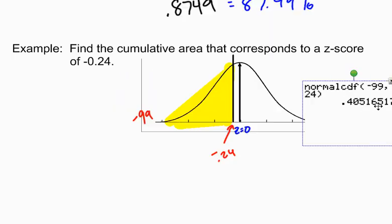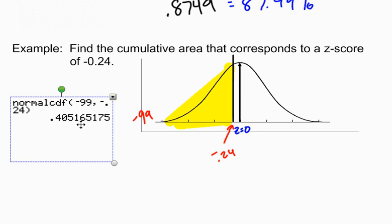So let me go ahead and pull this in over here. And there it is. The area, the cumulative area, that corresponds to a z-score of negative 0.24. In other words, the area to the left of a z-score of negative 0.24 is 0.405. I'll round off to four decimal places, 0.4052.